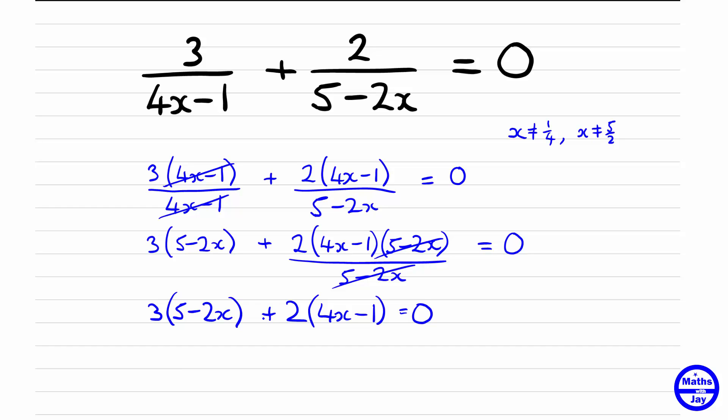Now that we haven't got any fractions anymore we're just going to multiply out the brackets and work out what x is equal to. So three fives are 15, three times negative 2x gives us minus 6x, and multiplying out the second bracket we get 8x and then minus 2 equals zero.